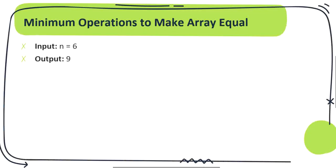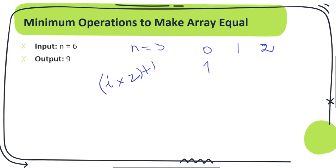Before going to the logic, let's understand this problem with a small example. Consider n = 3. The indices of the array go from 0 to 2, and the values are represented in the form i*2 + 1, so the values are going to be 1, 3, and 5. Now we have to make all the elements in the array equal.